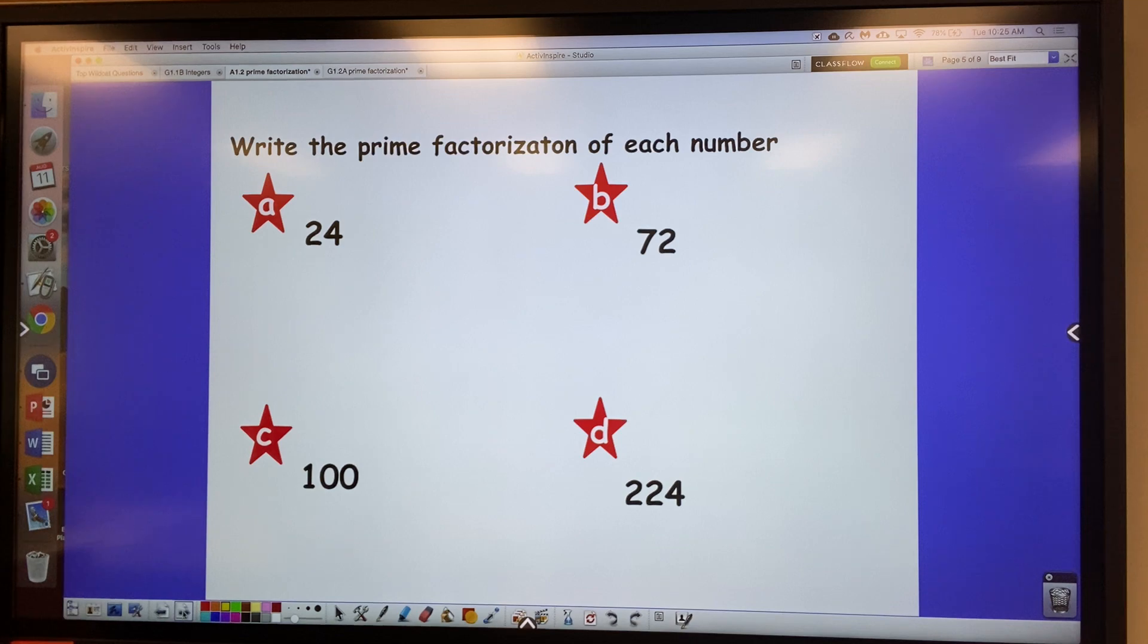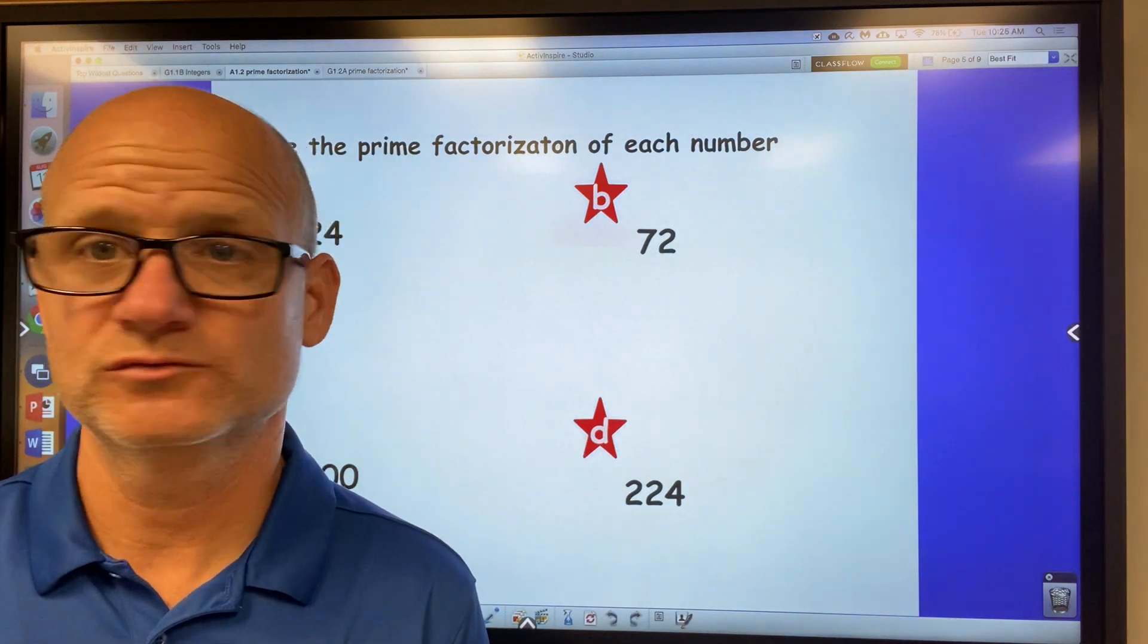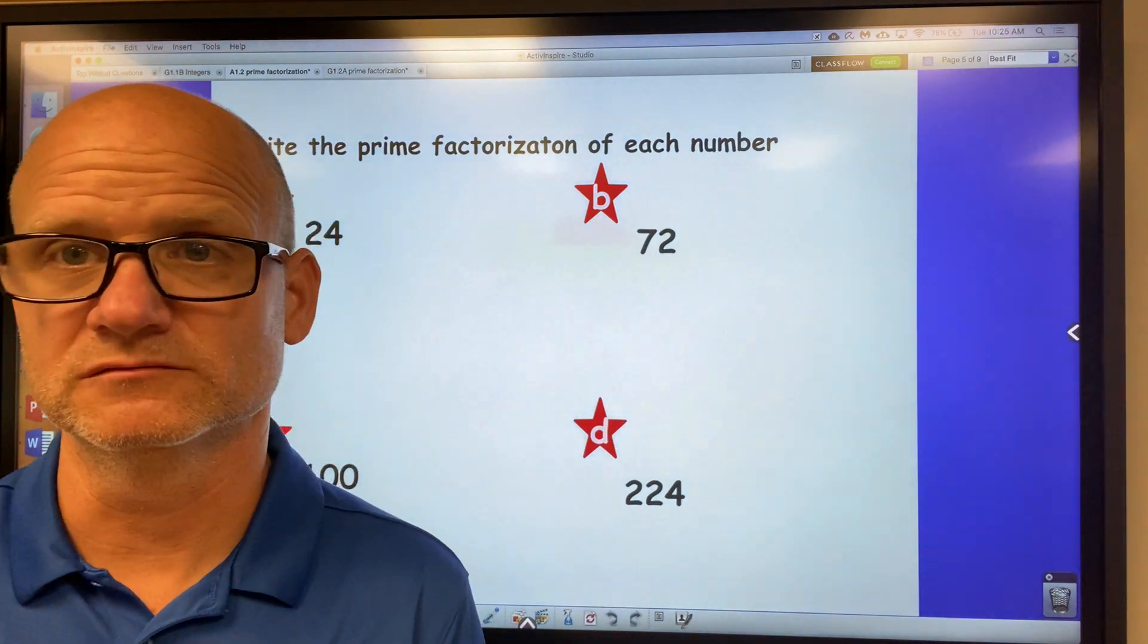So here's what I want you to do. Press pause and write down these numbers and find the prime factorization of each. Use whichever method you want to and we'll discuss tomorrow. Okay?